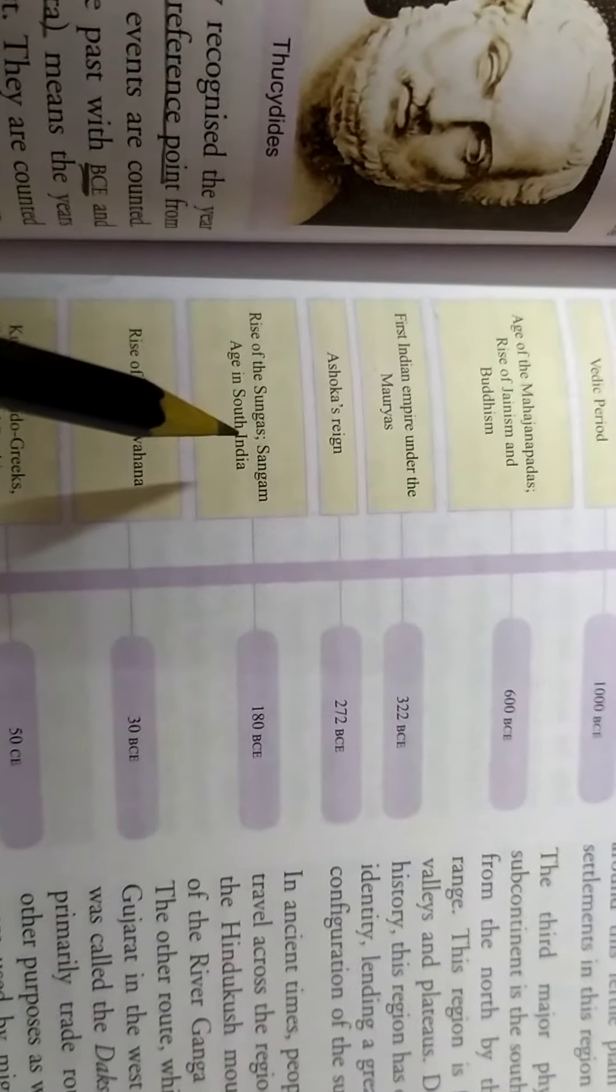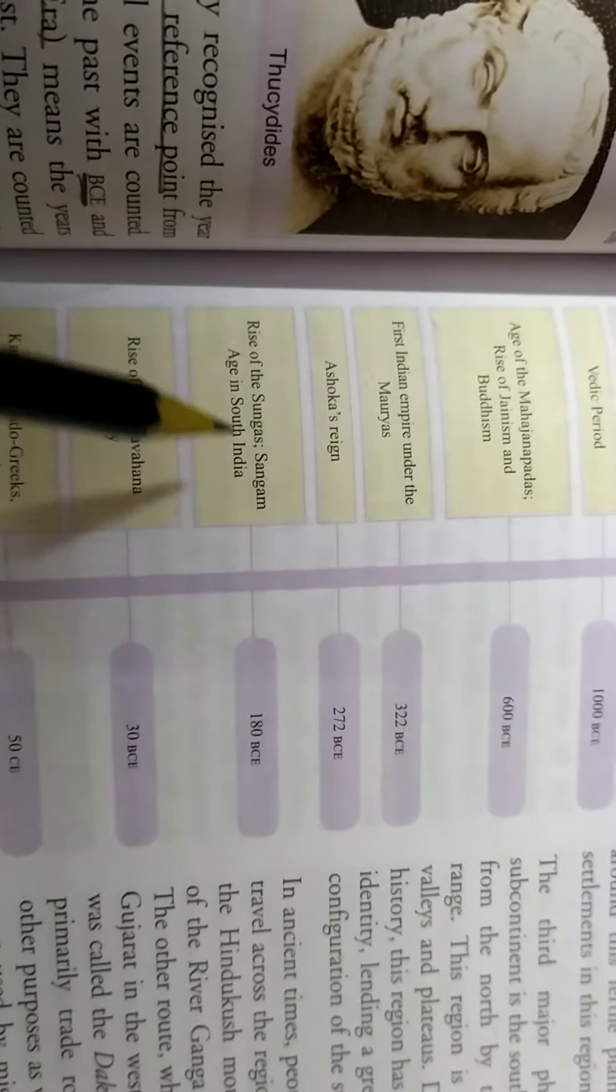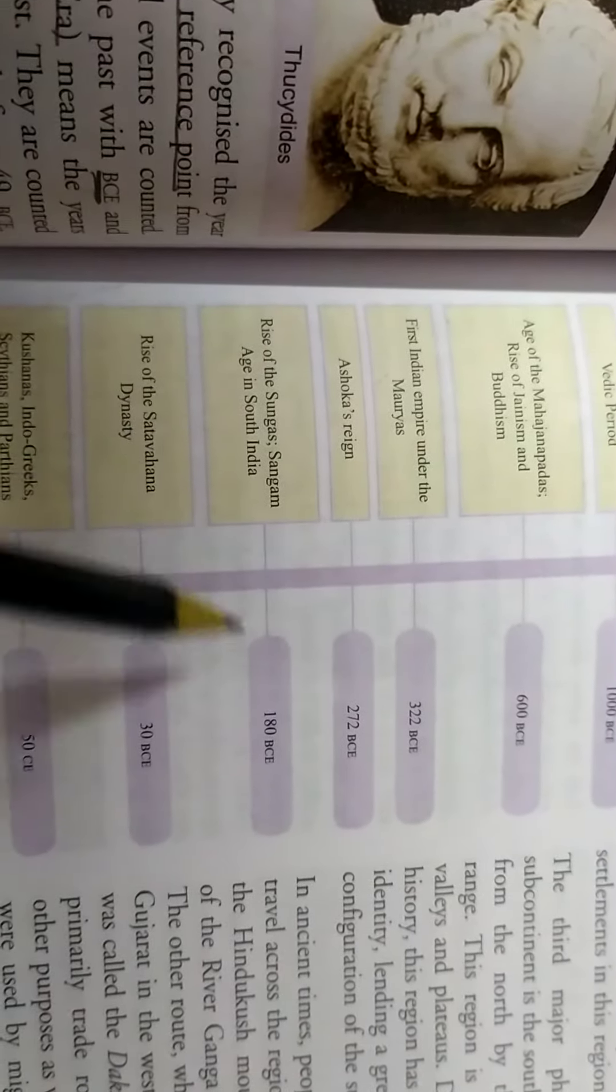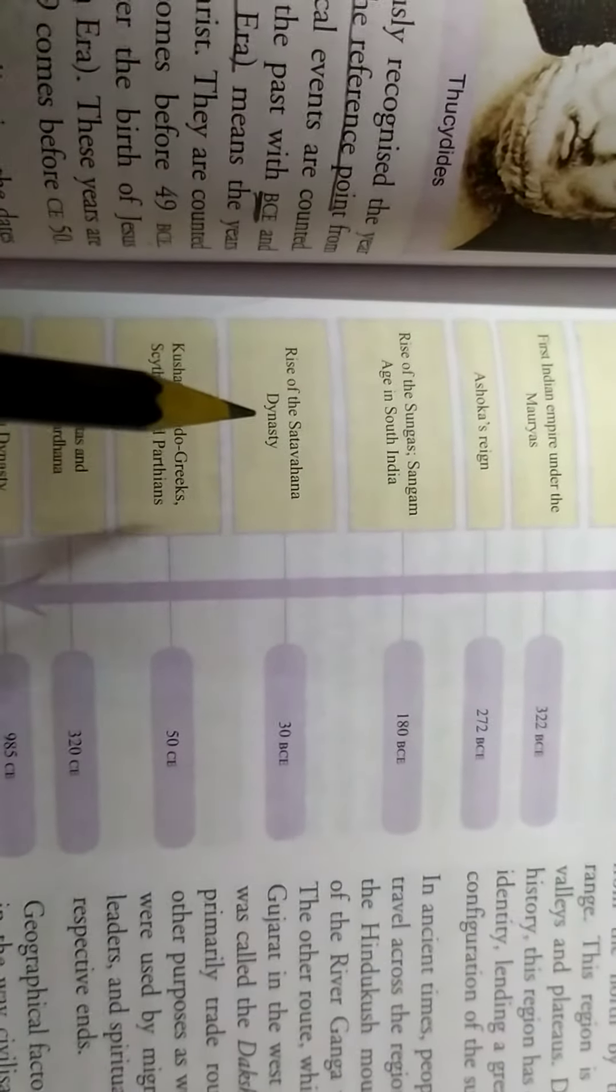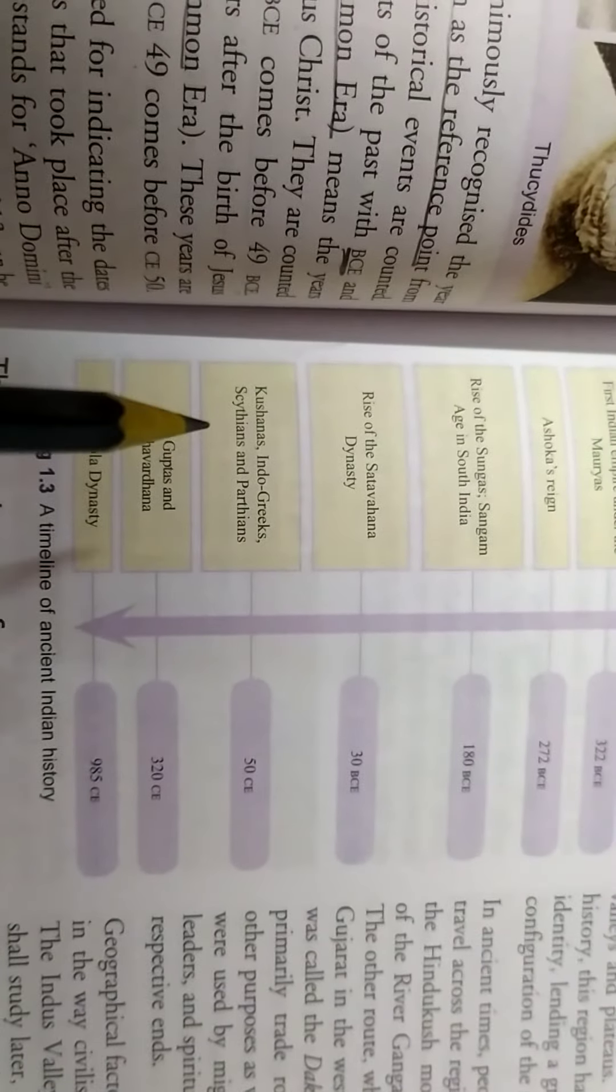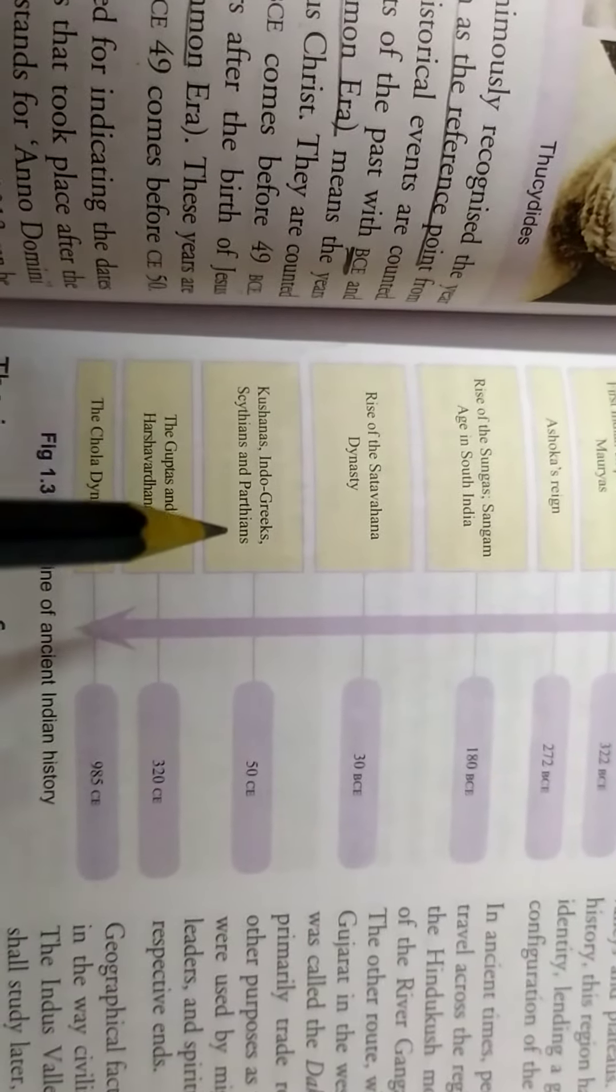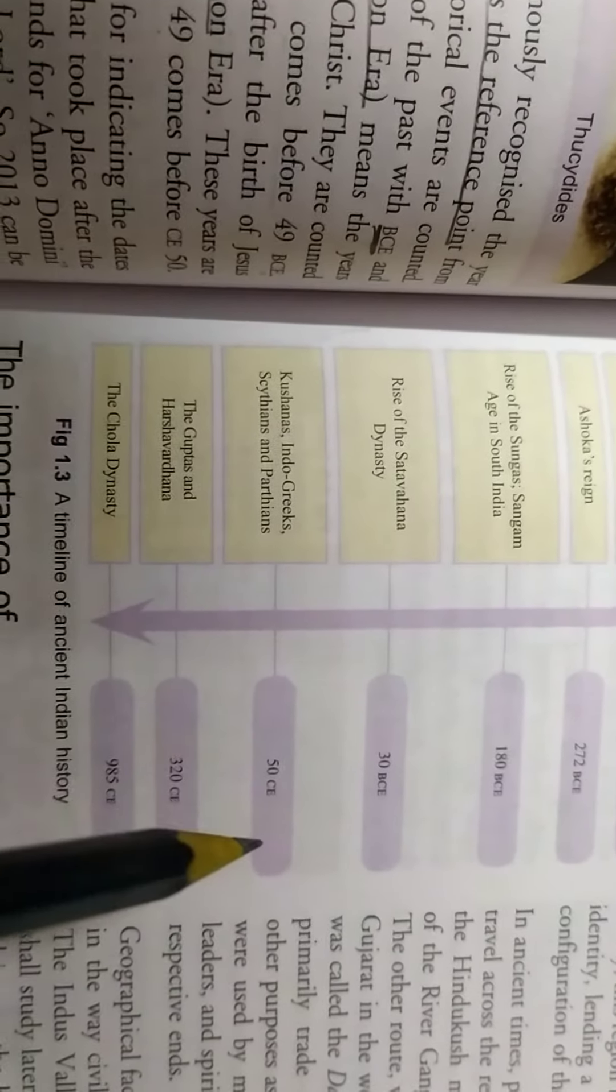Rise of the Sungha's Sangam age in South India, 180 BCE. Rise of the Satavahana dynasty, 30 BCE. The Kushanas, Indo-Greek, Scythians and Parthians, 50 BCE.